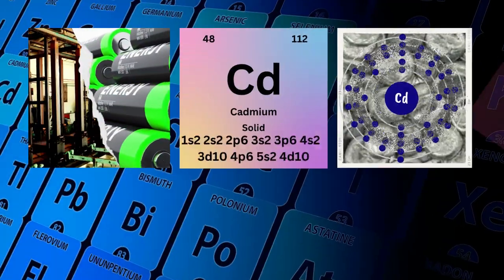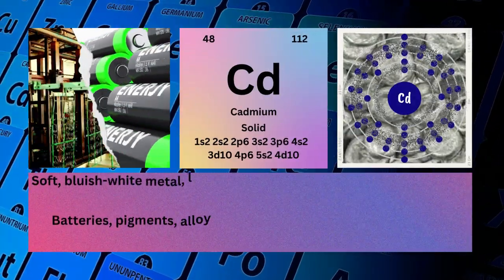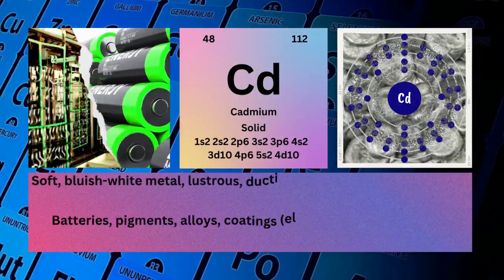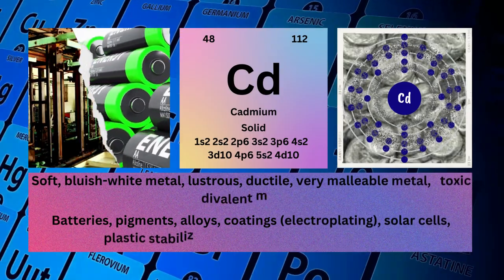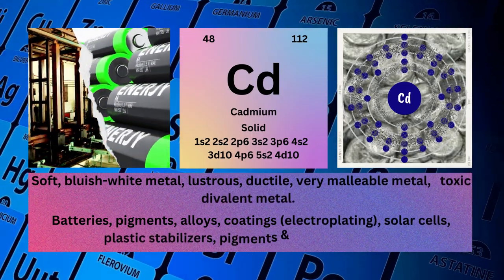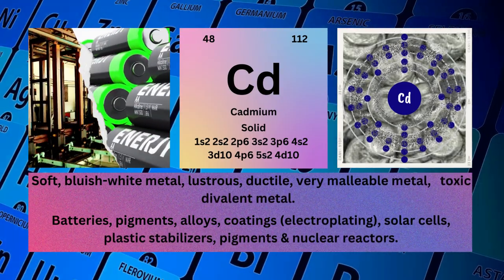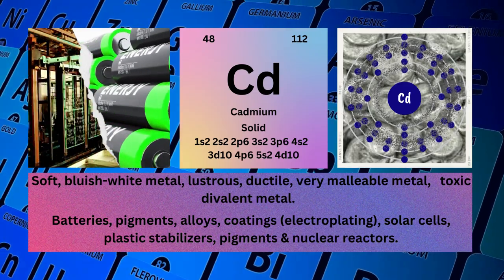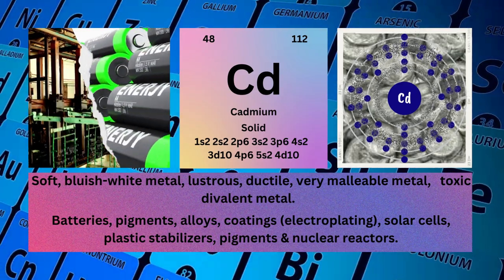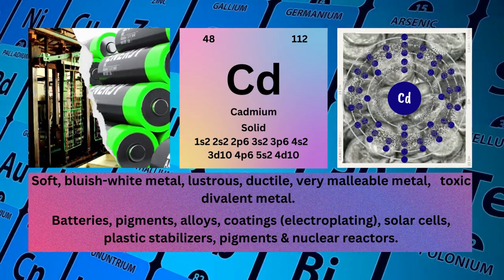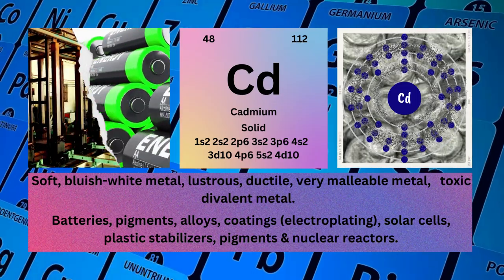Cadmium. Atomic number 48. Mass number 112. Symbol: Cd. State: solid. Electronic configuration: 1s² 2s² 2p⁶ 3s² 3p⁶ 4s² 3d¹⁰ 4p⁶ 5s² 4d¹⁰.